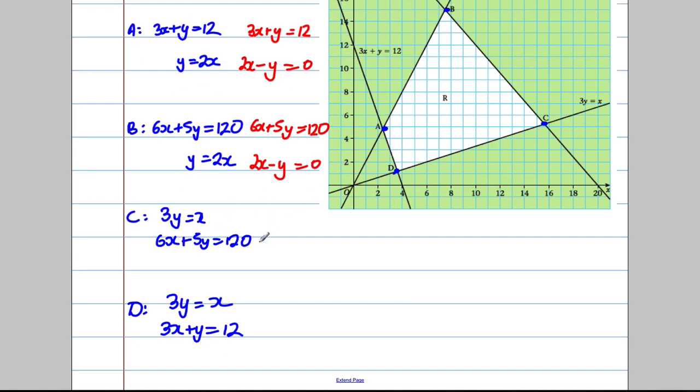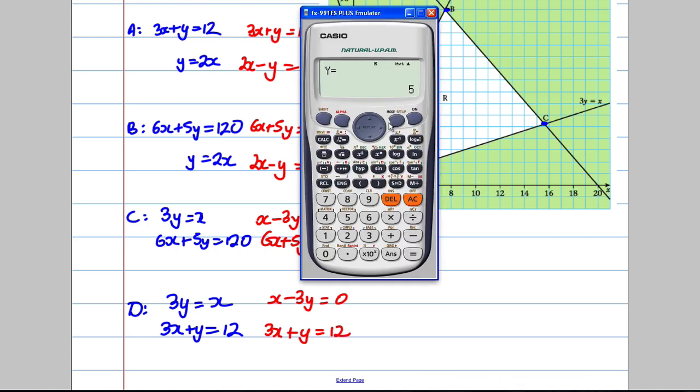This one here. Now, this one's fine. 6X plus 5Y equals 120. Now, this one here would be X subtract 3Y equals 0. Similarly here, X subtract 3Y equals 0 and this one would be 3X plus Y is equal to 12. So calculator out, mode, equation. Let's do each one. Number one.